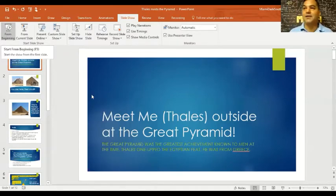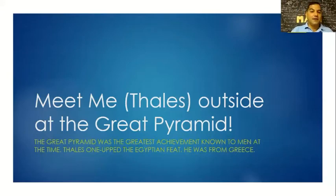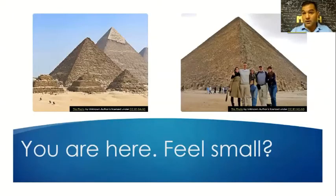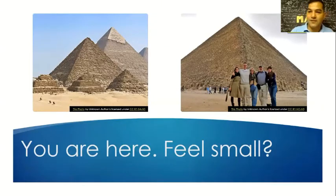Meet me outside - that's what Thales said. If it sounds like a challenge, it is. Meet me outside at the Great Pyramid. At the time, the Great Pyramid was the greatest achievement known to man, and it still is one of the greatest achievements. It's still standing three thousand years from now and we still don't know fully how it was built. So when Thales said meet me at the Great Pyramid, he was saying I'm gonna pick the biggest guy in the yard and defeat him. To put it in perspective, you are here, you're in front of this great pyramid. Do you feel small?